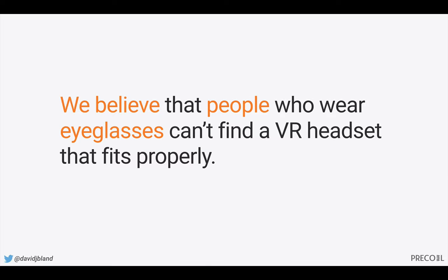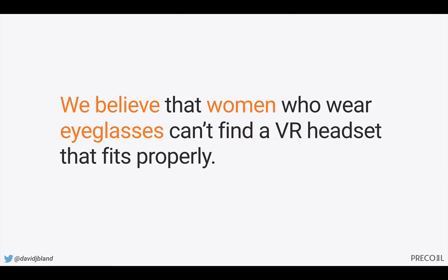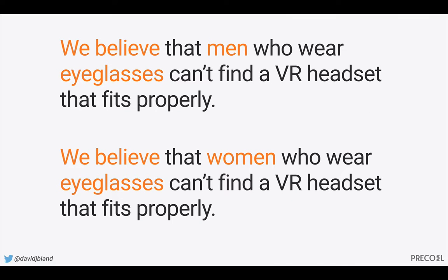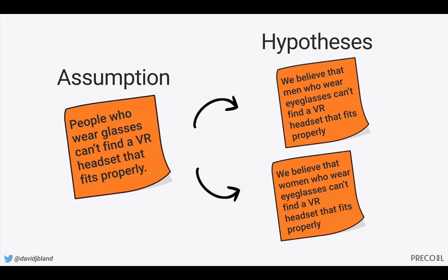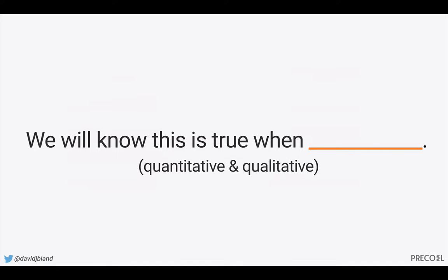Let's look at the term 'people' — it's not just people in general. Are there men who wear eyeglasses that can't find a VR headset? What about women? So we already have two hypotheses. We've taken a squishy assumption and broken it down into something testable and very specific. We need to know when these are true, so I like the statement 'we will know this is true when,' backed up with quantitative and qualitative information — the quantitative is the what, the qualitative is the why.